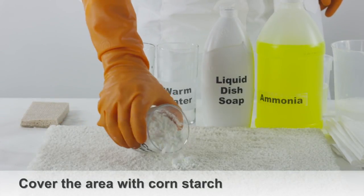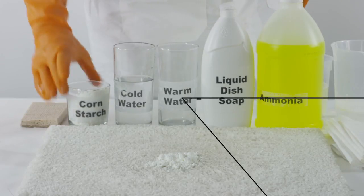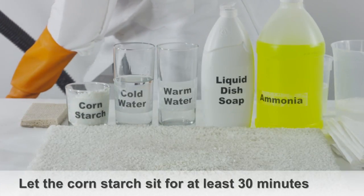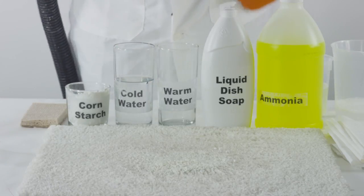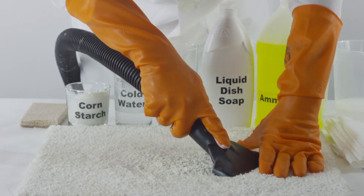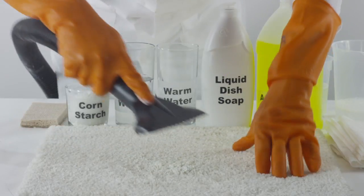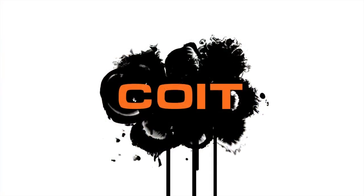Take enough cornstarch to cover the affected area and sprinkle it directly onto the carpet. Let the cornstarch sit on the stain for at least 30 minutes. Once the cornstarch has soaked up any remaining milk, vacuum the affected area of the carpet.